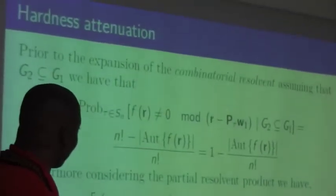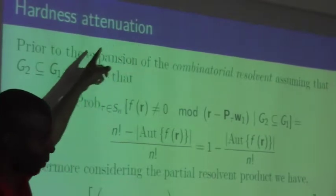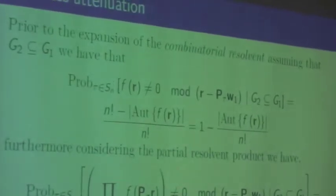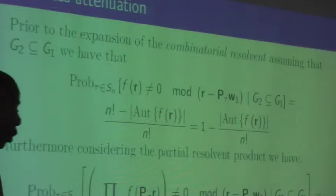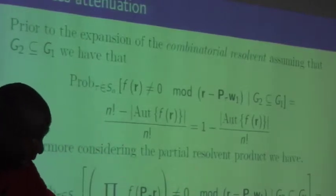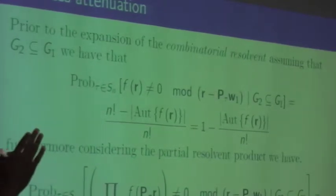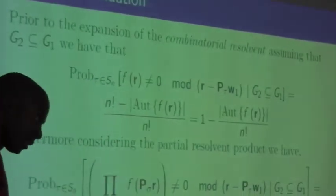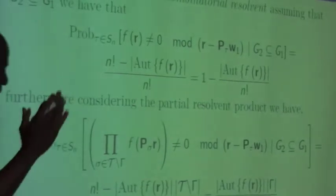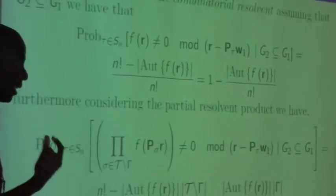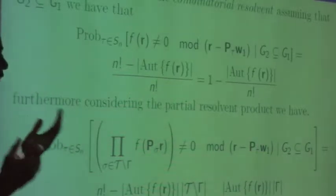Now let's think about a randomized approach for decreasing hardness — a hardness attenuation framework. Think of it like using Google: nobody searches the whole web on their own to create a ranking table; you let Google do that work. Similarly, I have a graph and I want to prove a solution exists for my subgraph isomorphism instance. I let somebody else compute the product — not over all permutations, but over a subset — increasing my probability of determining graph isomorphism.